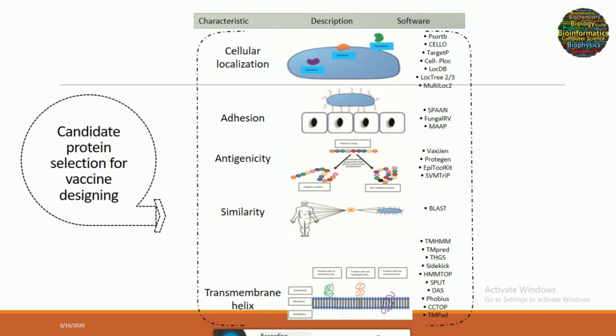Then we consider the adhesion characteristics of the protein — the protein must be adhesive and bind to the receptor, and we have servers to evaluate this. Then we come to antigenicity — the proteins selected must be antigenic, and for that purpose we use software and servers such as VaxiJen. The most important parameter is similarity with human proteins — to avoid autoimmune response, we must only select proteins that share no similarity with human proteins. Then we consider the transmembrane helix using tools like TMHMM and TMpred. Proteins with a lower number of transmembrane helices are easier to isolate, while those with a higher number are embedded deep in the membrane and cannot be isolated easily.